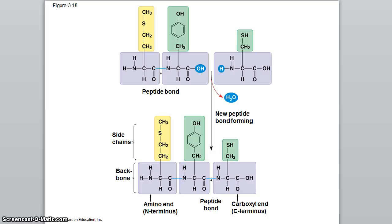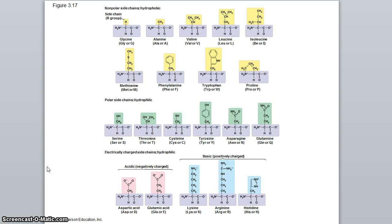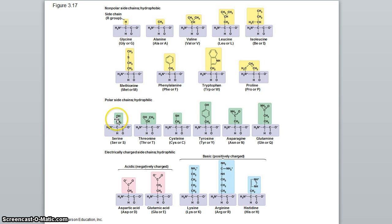A peptide bond is formed through dehydration synthesis — removing a hydroxyl group and a hydrogen releases water and joins two amino acids together. The different R groups define the 20 amino acids. Some are non-polar with lots of carbons and hydrogens, some are polar with oxygen and hydrogen, and some can be acidic or basic. This is going to determine a lot about the function of that protein.